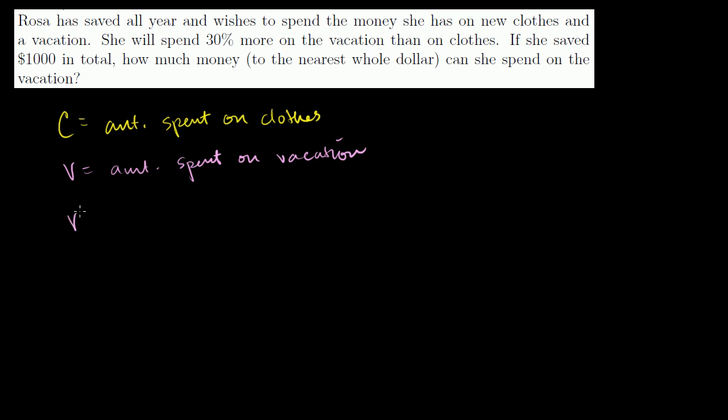So the vacation is going to be equal to the amount she spends on the clothes plus 30% of the amount she spends on the clothes. And this is the same thing as 1.3 times the amount she spends on the clothes. That's how much she's going to spend on the vacation.